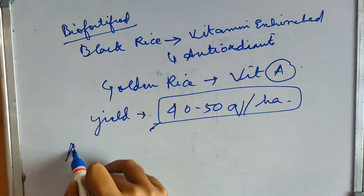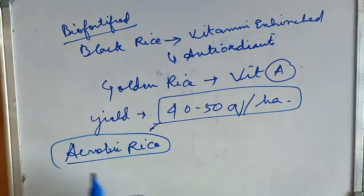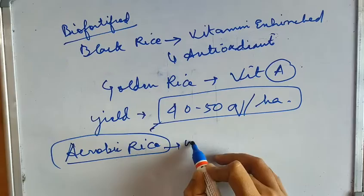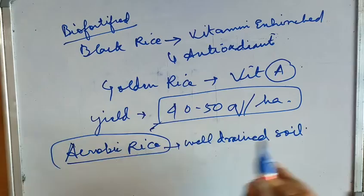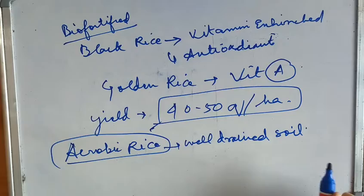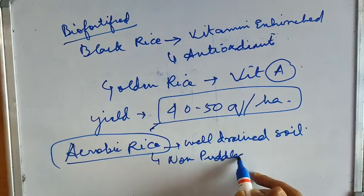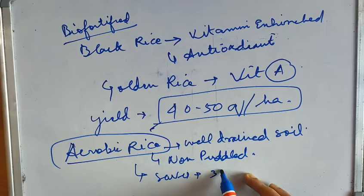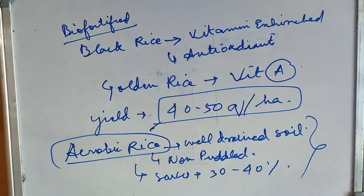Another important type is aerobic rice. It is grown in well-drained soil — not in submerged or waterlogged soil. There is no puddling here. It saves water up to 30 to 40 percent. This was asked in previous exam years, so it is important to know.